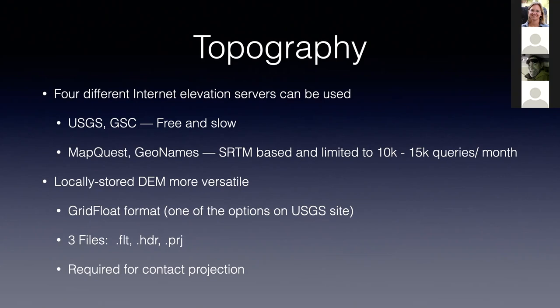The commercial servers are limited to 10 to 15,000 queries per month across all GMDE users worldwide. When they stop returning elevations, it means they've been overloaded for the month, so use the free servers if you can. More flexible, though requiring more work, is to use locally stored digital elevation models. GMDE can read the grid float format — if you download a DEM from the USGS website, there are three files: the large binary file with suffix FLT, and two small metadata files, dot HDR and dot PRJ. You need all three files to use local DEMs, and local DEMs are required for contact projection across topography.